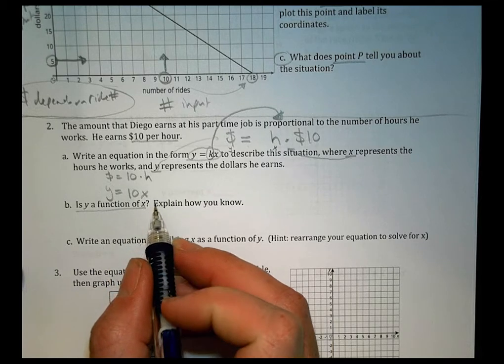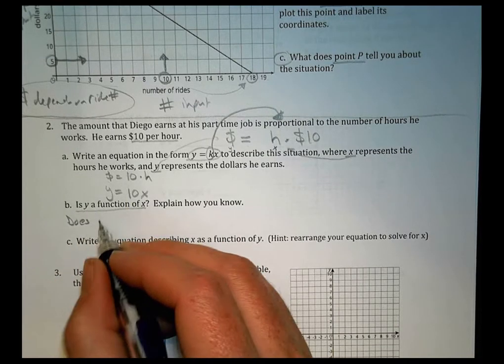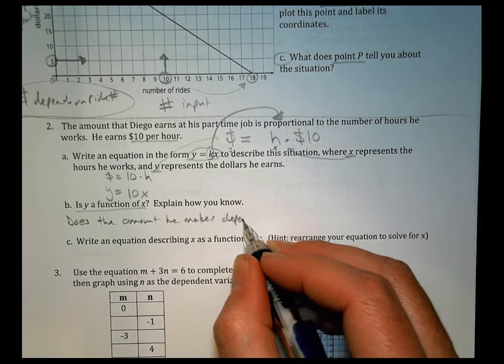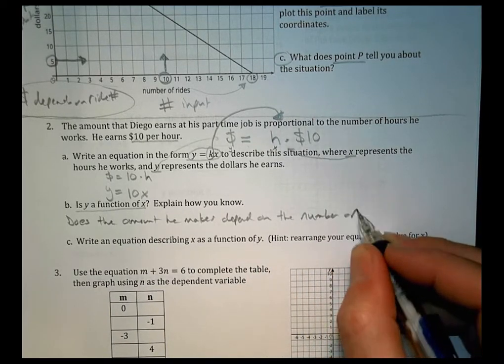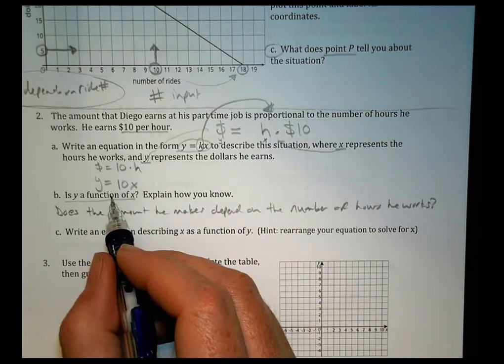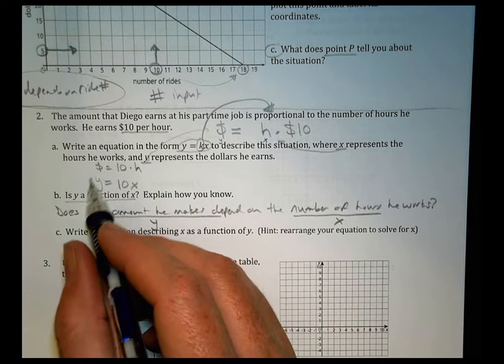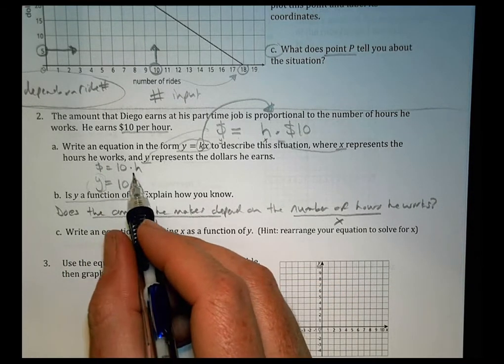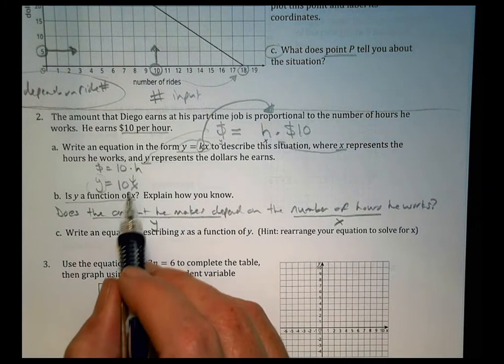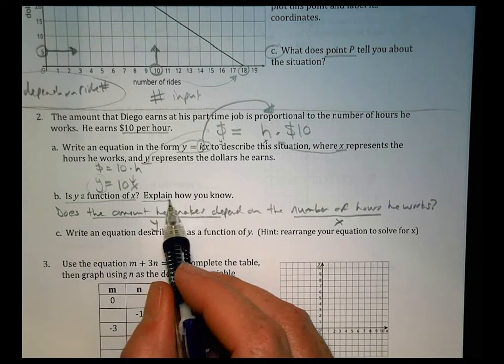So this becomes our X, and that becomes our Y. Write an equation in the form of Y equals KX to describe a situation. Now, the reason they're saying K is they want you to know that it is a proportional value, meaning it's not going to change over time. So X is going to be the hours that he works, and Y is a dollar he earns. We had the dollar he earns equals how much money he earns for every hour. To write it with X and Ys, we would say that Y equals 10 times X. So the amount of money he earns depends on the number of hours he works times $10. So is Y a function of X? So what we're questioning here is, does Y, the amount he makes, does the amount he makes depend on the number of hours he works? That's what we're asking when we're saying, is Y a function of X? Because the amount he makes is the Y, and the number of hours is the X. So is this value dependent upon what that value is going to be?